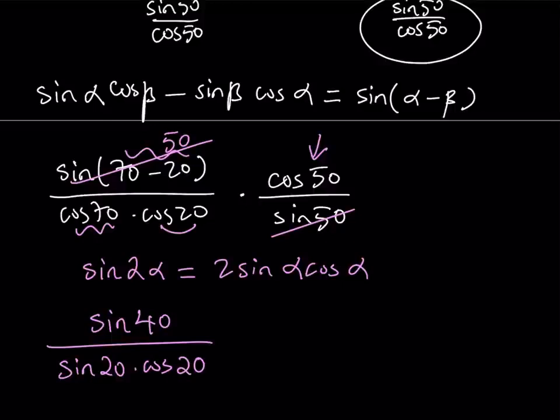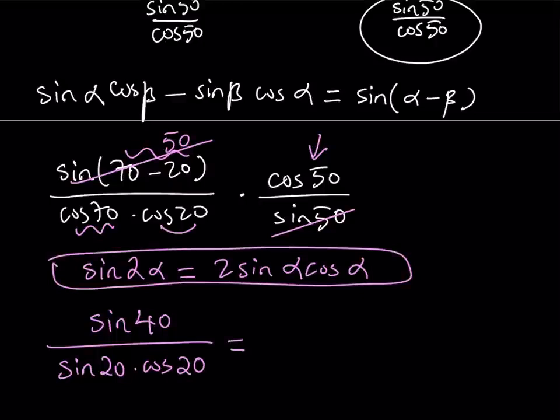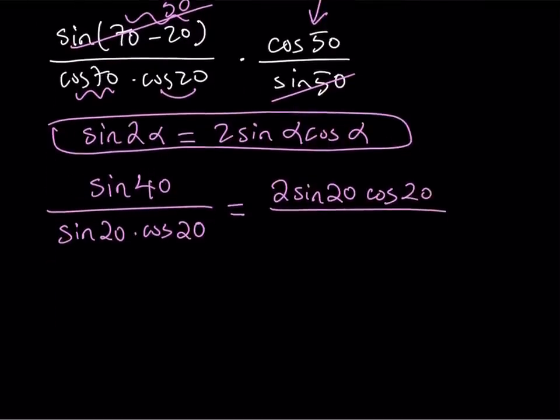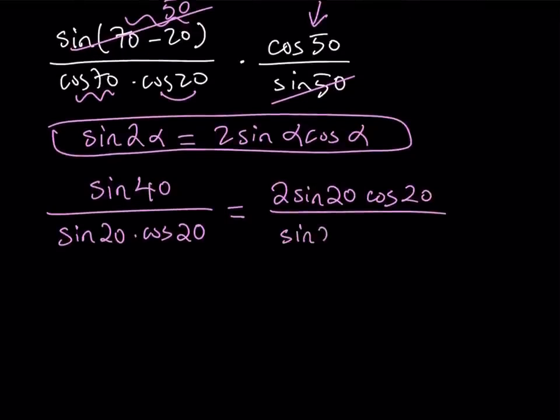Now sine 40 and sine 20 cosine 20, so they have the double angle relationship. So now I can use this identity for sine of 40, and that can be written as basically 2 sine 20 cosine 20, and that is divided by sine 20 times cosine 20. Again, these are all in degrees, even though I'm not writing it because it takes too long to write.